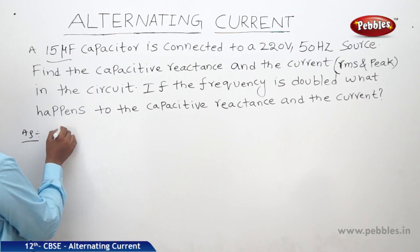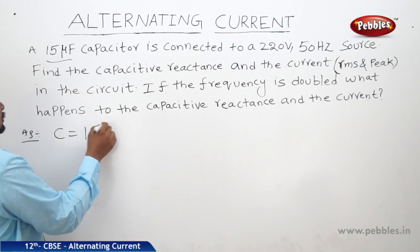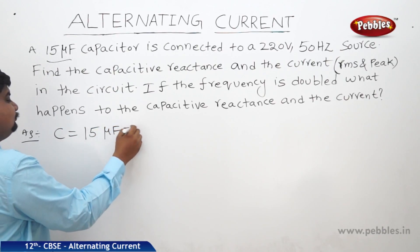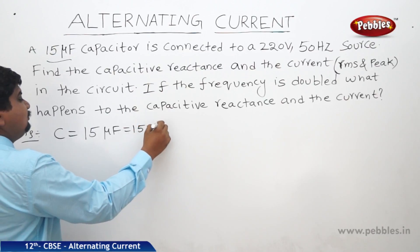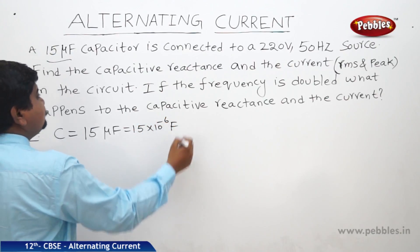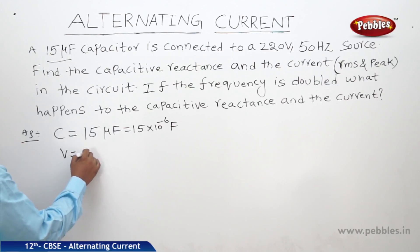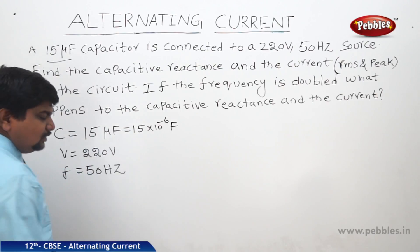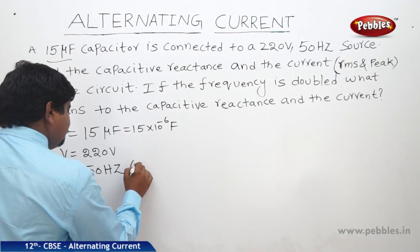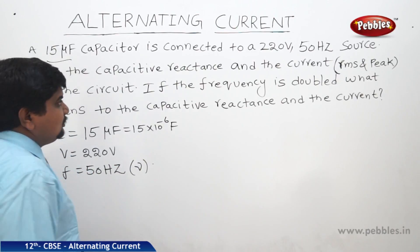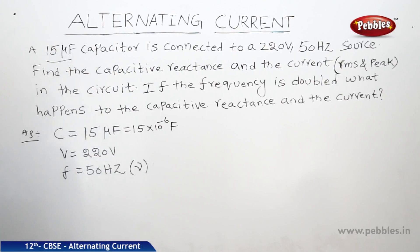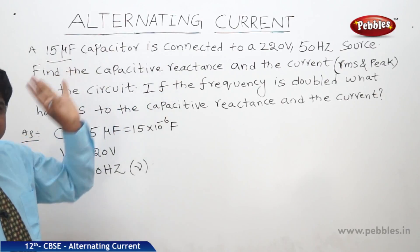What are the given values? Capacitance is 15 microfarad, 15 × 10^-6 farad. Voltage 220 volts. Frequency 50 hertz. In some textbooks frequency is denoted like this also. We can use the standard symbols. These are the given values.